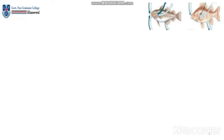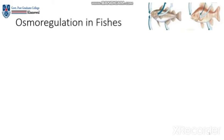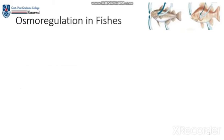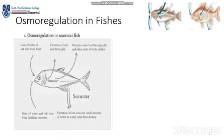Osmoregulation in fishes. Fishes live in two types of environments: sea water and fresh water. In sea water, there are a lot of solutes. A fish living in sea water will gain water and salt ions from food, and it will also drink salty water.